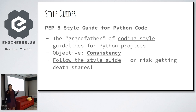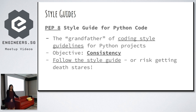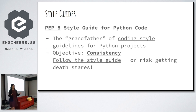This is a Python project so there are style guides to follow. One is PEP 8, the style guide for Python code. If you code in Python you must know PEP 8 — PEP 8 is the grandfather of coding style guidelines for Python projects. Different Python projects may have slightly different guidelines but ultimately they go back to PEP 8, which is about consistency. You want consistency across the codebase when so many people are working on it.